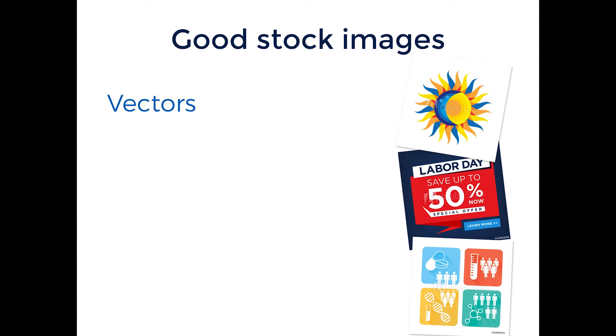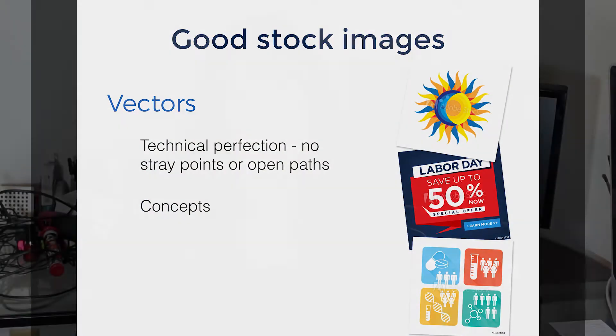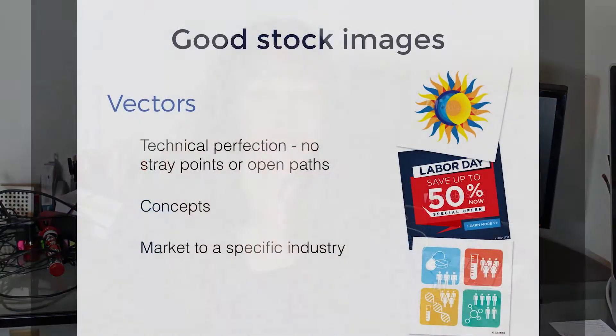Now let's switch over to vectors. Vectors share a lot with photography. You also want technical perfection — no stray points or open paths. Make sure everything is really tight from a technical standpoint. You also want to focus on concepts, because a concept will sell an image better than just a picture of a random object. So instead of drawing a pig, maybe go towards something like a piggy bank, because that could also say finance or saving money. Putting some lightning bolts in the little slot of the piggy bank could make someone think 'saving really fast.' Anything that triggers a graphic designer's creativity is going to be good — concepts work really well. You also want to market to a specific industry, same as photography.